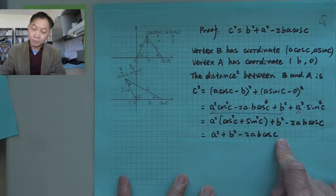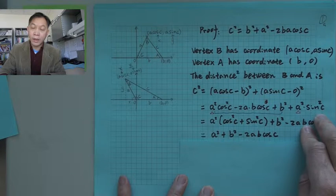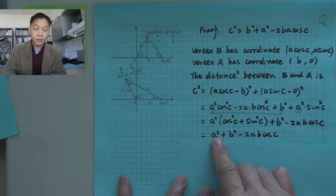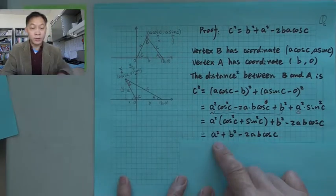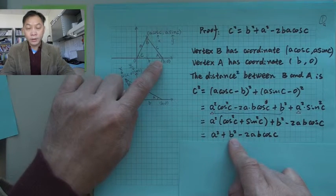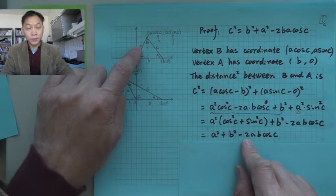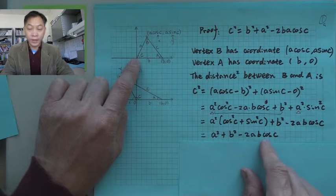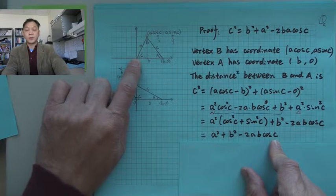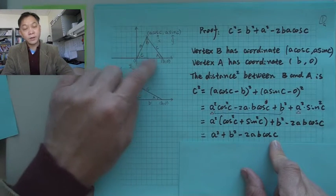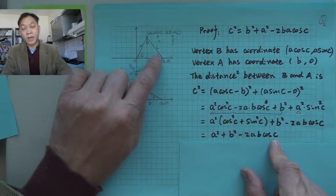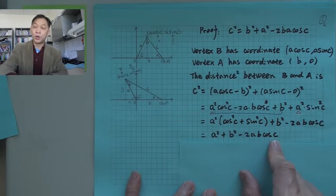So what we get is the Law of Cosines: c squared equals a squared plus b squared minus 2 times a times b times cosine of angle C. This tells us that if you know two sides and the angle between those two sides, then the third side can be determined by the Law of Cosines.